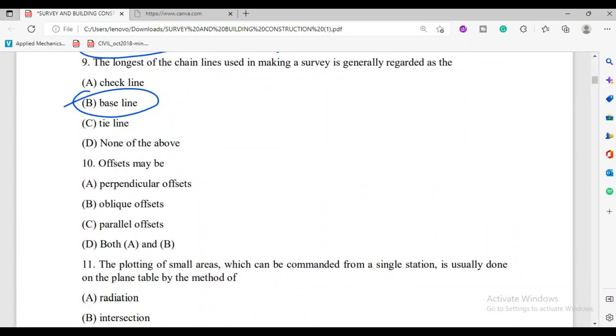Offset. Offset is basically perpendicular offset or oblique offset. Offset means suppose I want to denote a building. This is your survey line. I will take some perpendicular offset or some angular offset, but not parallel. That means option D, both A and B. That is perpendicular offset and oblique offset.